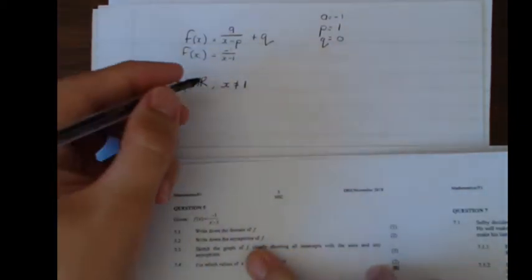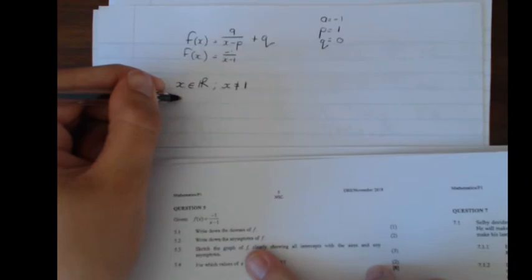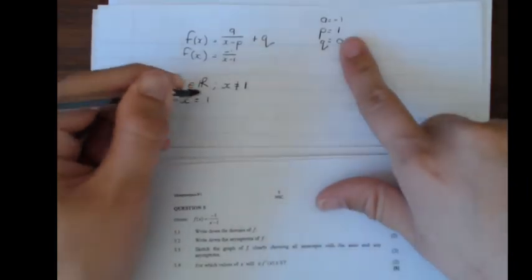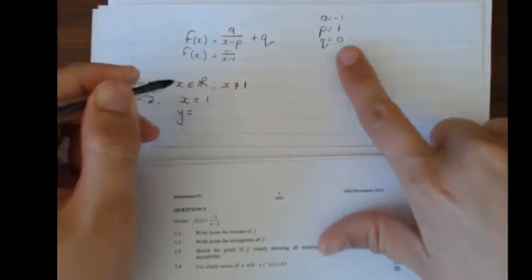5.2, write down the asymptotes. The asymptotes is x is equal to p, which is 1, and y is equal to q, which is zero. So there's the equations of my asymptotes.